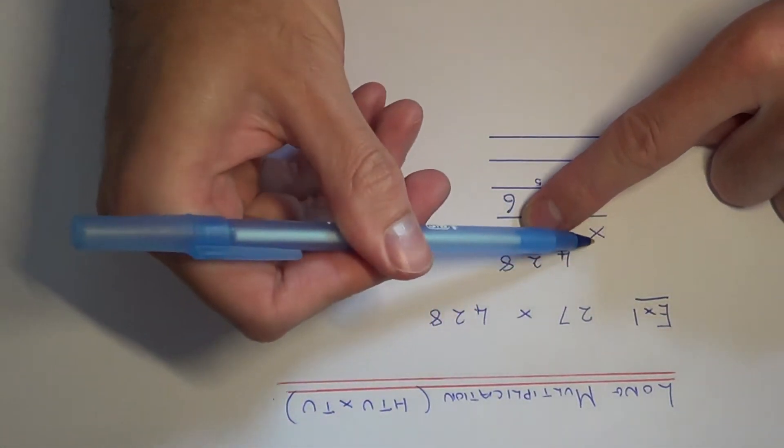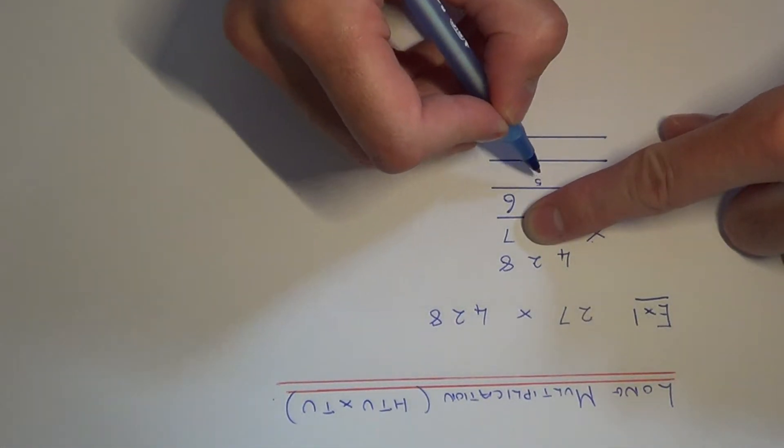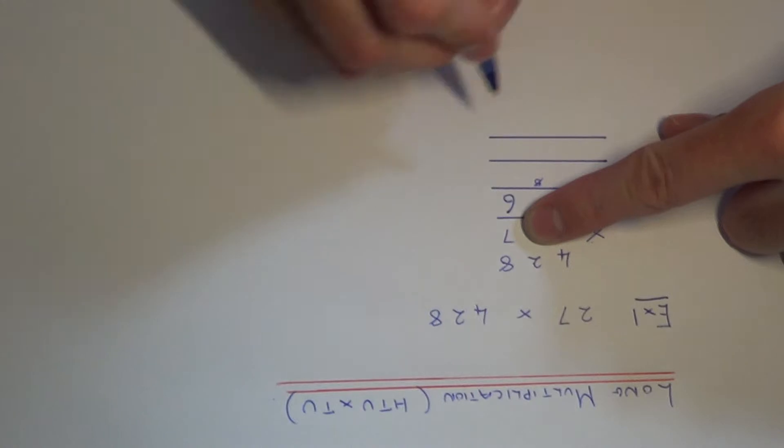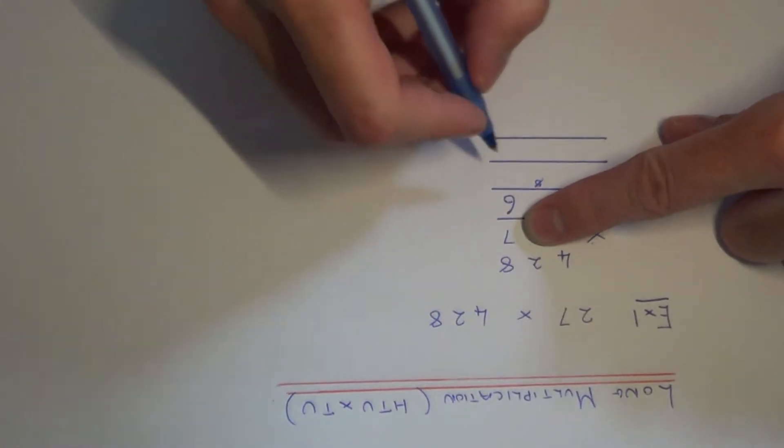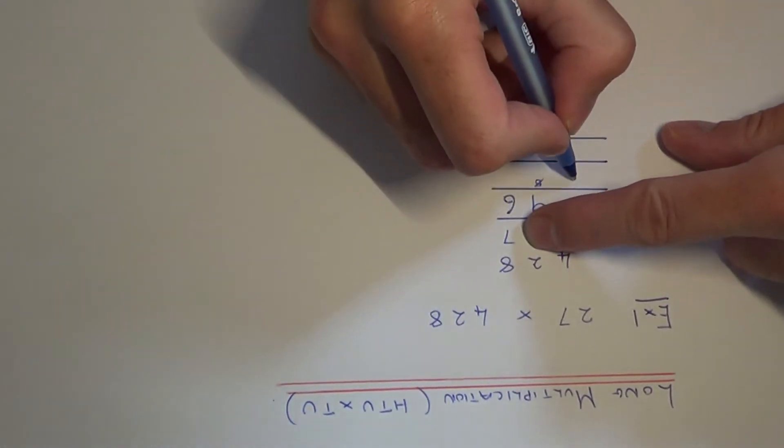Then we do 2 times 7 which is 14. And we need to add on the 5 that we've carried underneath to make 19. So put the 9 on the answer line and put the 1 underneath.